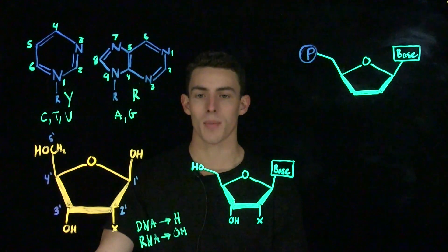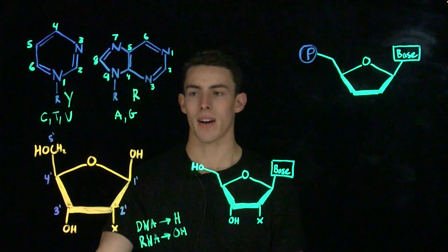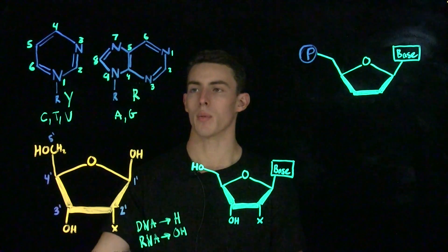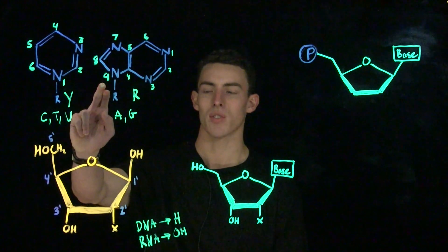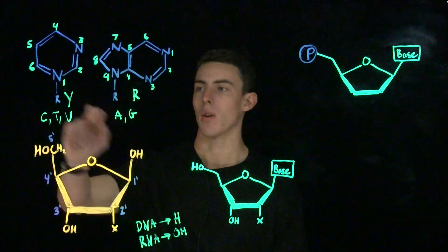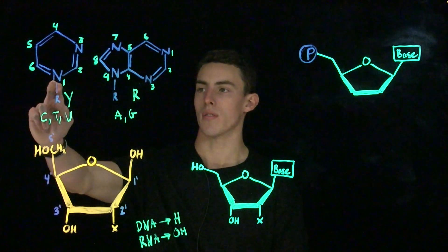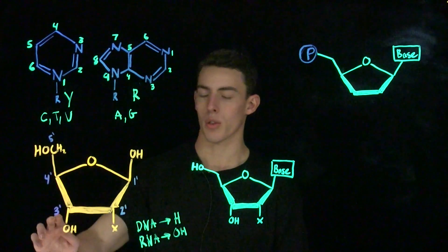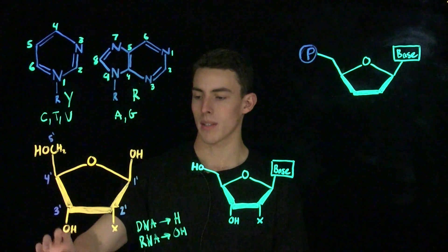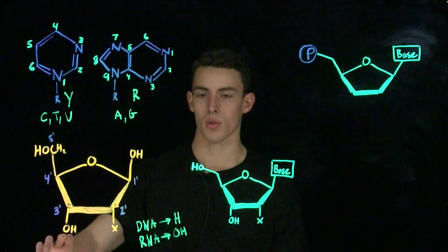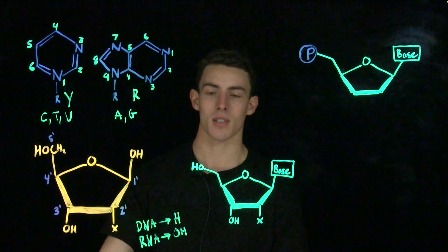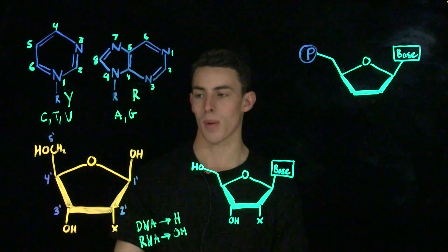The one-prime carbon of a ribosugar may also be modified by the addition of a base. The one-prime carbon will form a bond with the ninth nitrogen of a purine ring or the first-position nitrogen of a pyrimidine ring. The three-prime hydroxyl group is important because it is always needed to initiate replication, and thus replication proceeds in the five-prime to the three-prime direction.